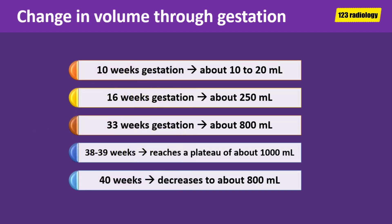Amniotic fluid volume undergoes characteristic changes with gestation. At 10 weeks of gestation, it is about 10 to 20 milliliters. At 16 weeks, it is about 250 milliliters. At 33 weeks, it is about 800 milliliters. At 38 to 39 weeks, it reaches a plateau of about 1000 milliliters. Finally, it decreases at 40 weeks of gestation to about 800 milliliters.